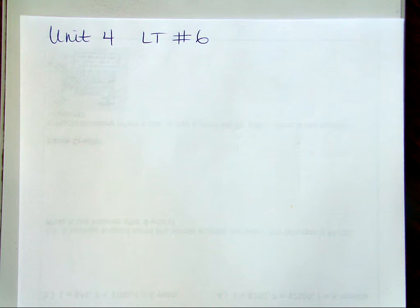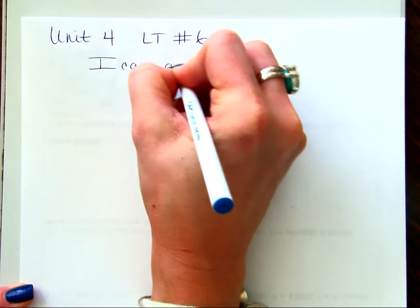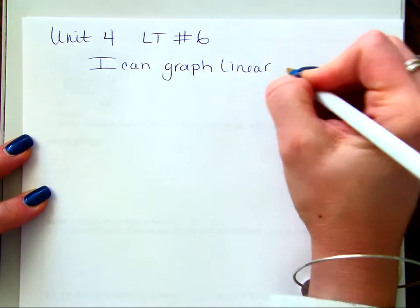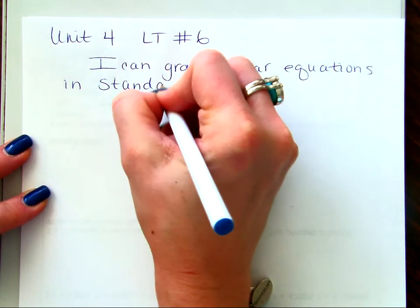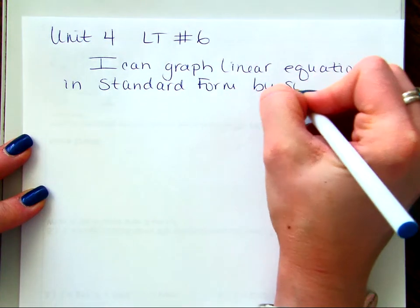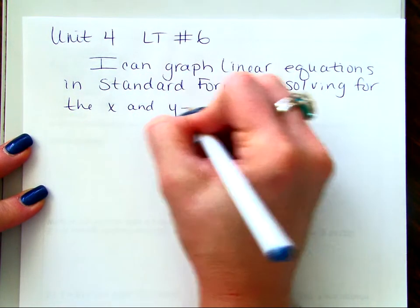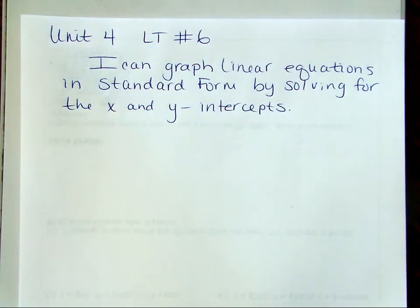So the third form we're going to learn today is called standard form. And those are the only three that you're going to need to know. So, this learning target is, I can, so we're going back to graph, okay? This whole unit is graphing. Linear equations in standard form now, not slope-intercept, not point-slope.